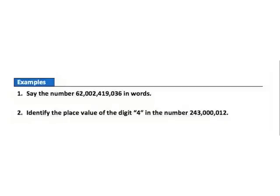Now let's take a look at a couple of examples. Example one: say this large number in words. There are four periods, so I start with the billions period. Those digits read sixty-two, so I say sixty-two billion. Then two million. Then four hundred and nineteen thousand. And finally thirty-six. So the full number is: sixty-two billion, two million, four hundred and nineteen thousand, thirty-six.